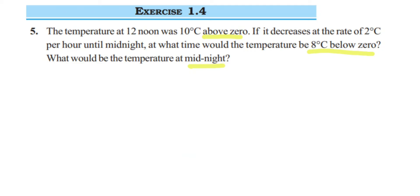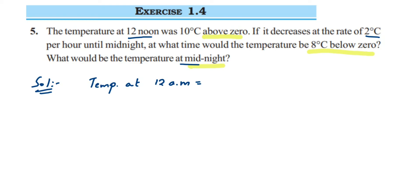The temperature is decreasing — every hour it decreases by 2 degrees Celsius, so that's minus 2. If it were increasing, it would be plus 2. From 12 noon to midnight there is a 12-hour gap. So we're going to multiply minus 2 by 12 — that's easier than adding minus 2 twelve times. Let me write down the solution. The temperature at 12 p.m. is 10 degrees Celsius.